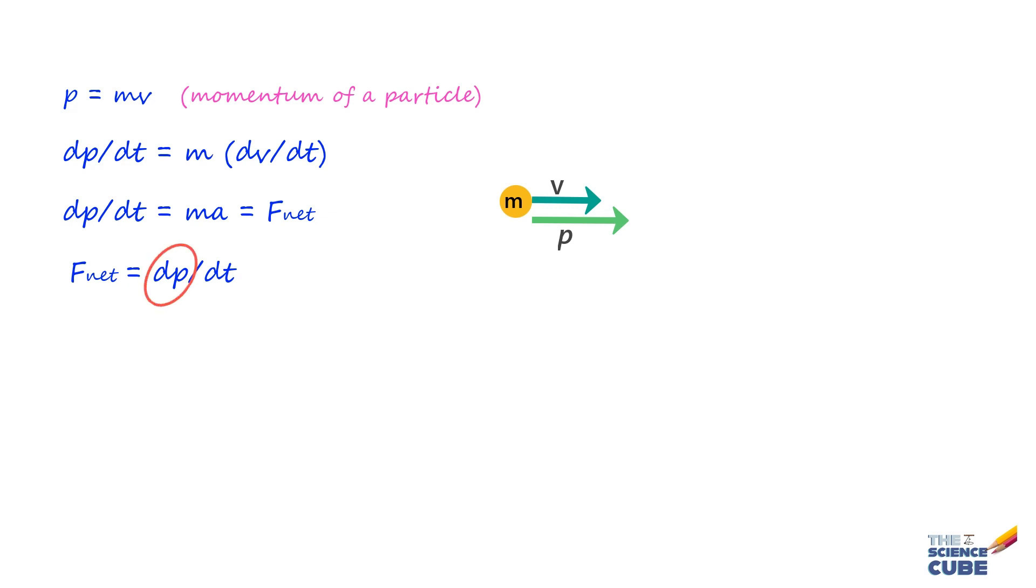This change in momentum is always in the direction of the net force. Thus, the equation F_net = dP/dt and F_net = MA are equivalent expressions of Newton's second law of motion for a particle.